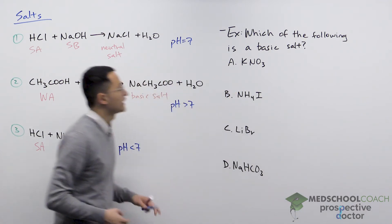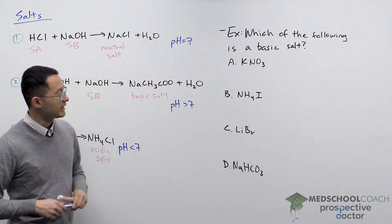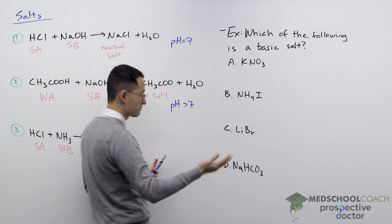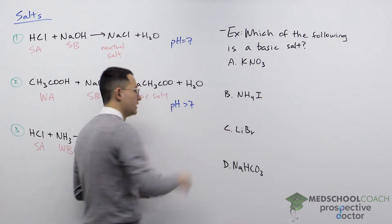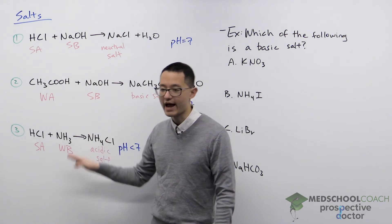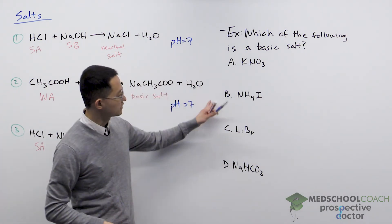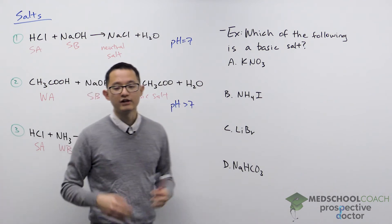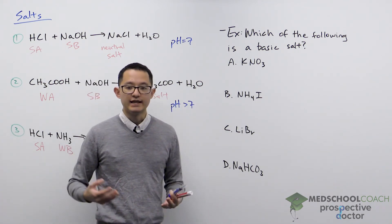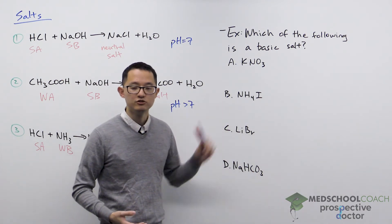Let's take a look at an example question: which of the following is a basic salt? Like on the MCAT, there are four answer choices, but the difference here is I'm not showing you the reactions for how the salts were formed. That means you're expected to look at the salt, look at the ions that make it up, and determine whether it is an acidic, basic, or neutral salt.